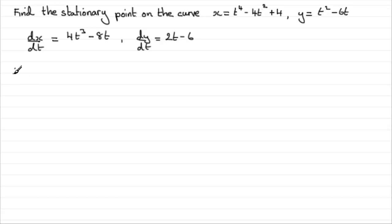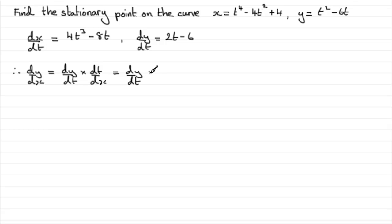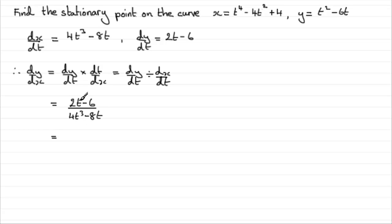In order to find dy by dx, we use the chain rule: dy by dt times dt by dx, which is equivalent to dy by dt divided by dx by dt. So we have dy by dt, which is 2t minus 6, divided by dx by dt, which is 4t cubed minus 8t. We can divide top and bottom by 2, leaving us with t minus 3 over 2t cubed minus 4t.